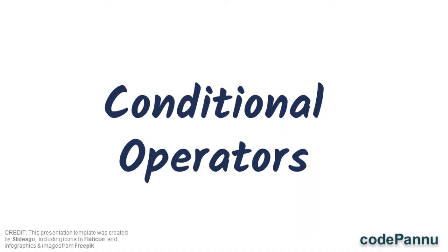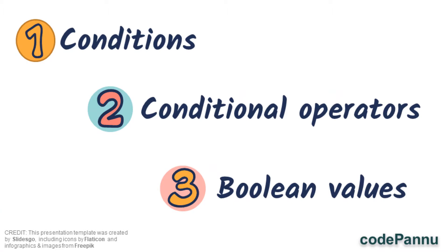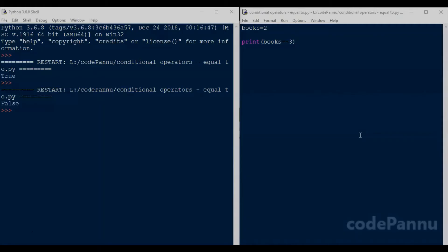This is the second video on the topic of conditional operators. If you are interested in watching the previous video on this topic, the link is given in the description box. So I hope you understood conditions and boolean. When you ask a question it's called checking a condition, and the value we get as an answer or output is the boolean value. We can only get two values as output, which is either true or false.